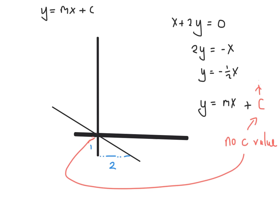Now let's say we're asked to graph a line where the equation is x plus 2y equals 0. Notice there's no standalone number — it's not like x plus 2y plus 7 equals 0. When there's no standalone number, you know the line is definitely going through the origin. Once you know that, you then need to figure out another point on the line in order to draw it.